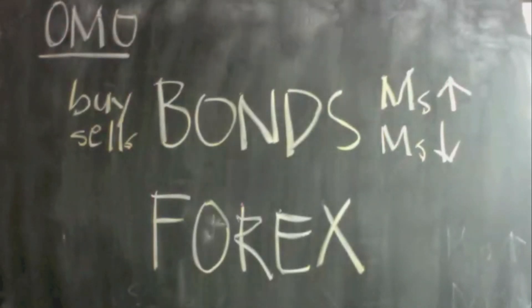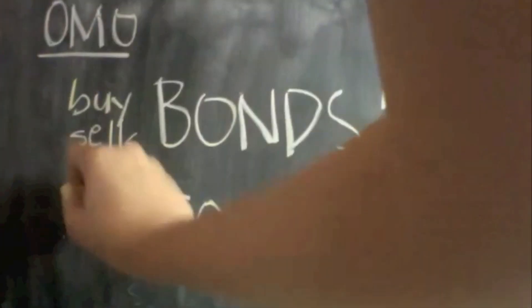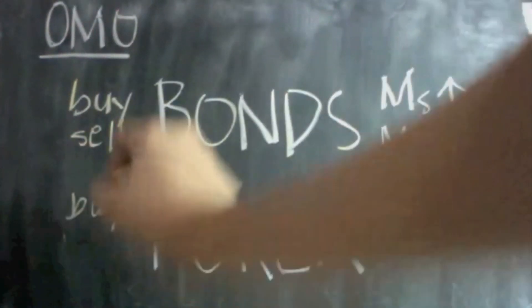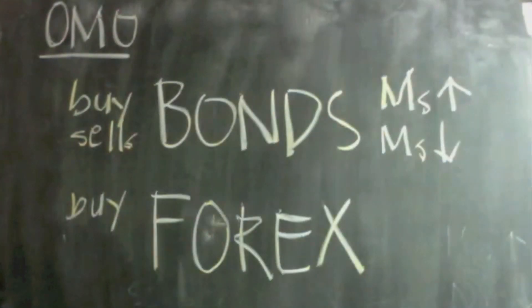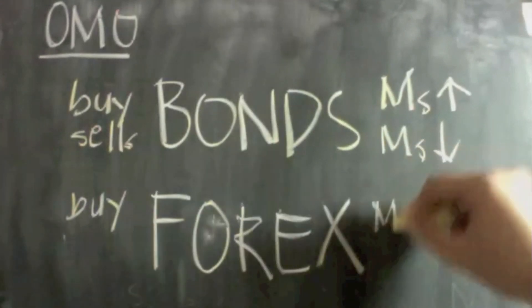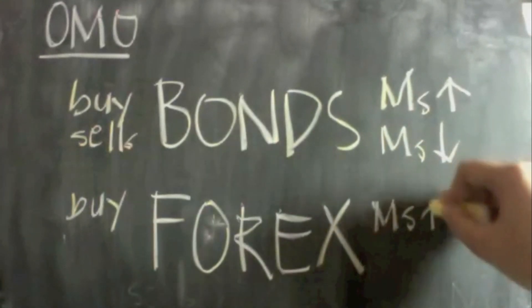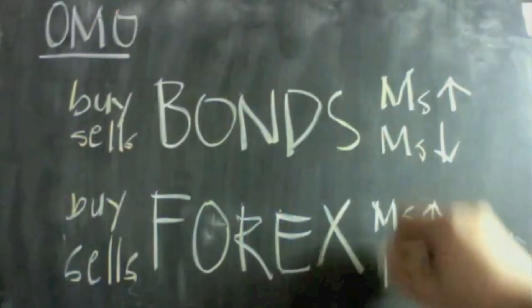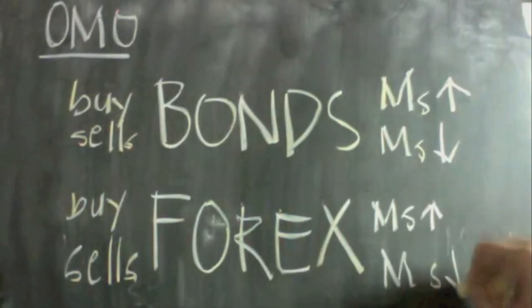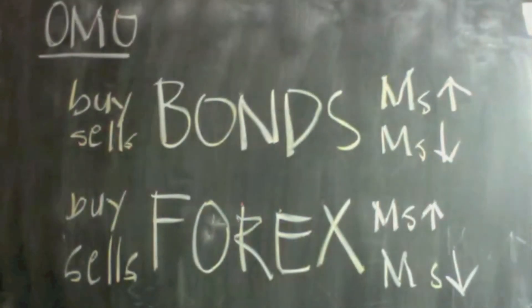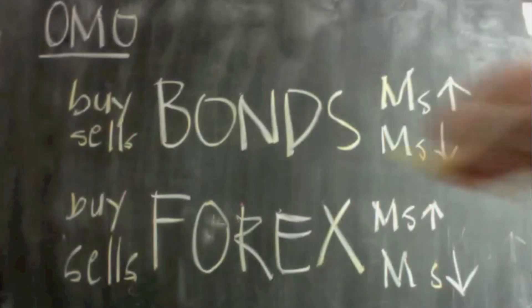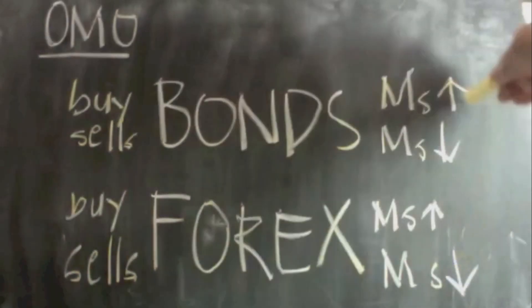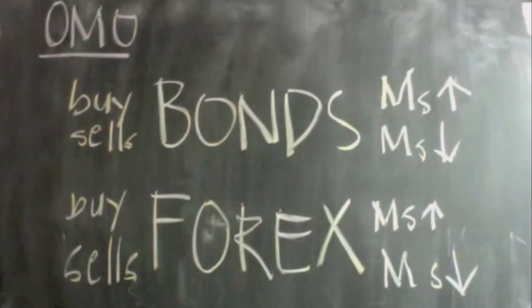The same goes for foreign exchange. When private institutions or firms buy foreign exchange from the BSP, the money supply increases as the BSP shells out cash. While if it sells foreign exchange, the money supply will also decrease. That is the relation of bonds and foreign exchange to the money supply through Open Market Operations.